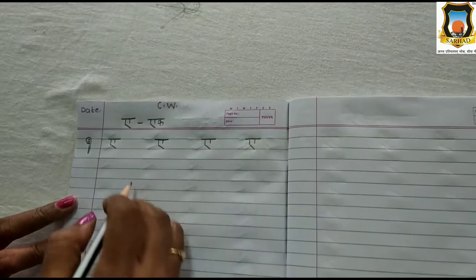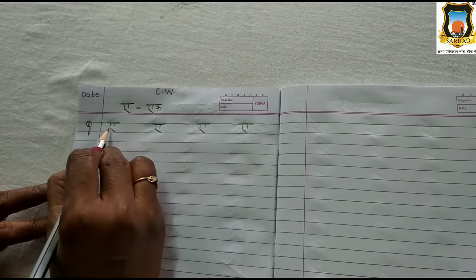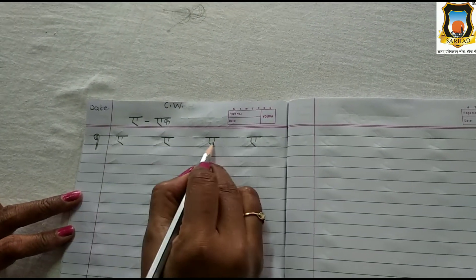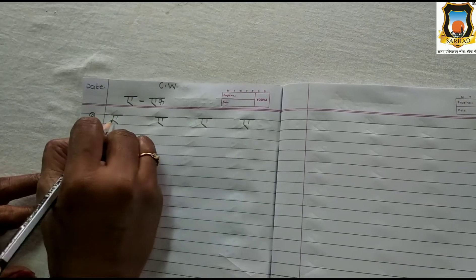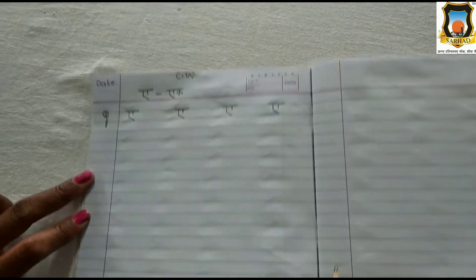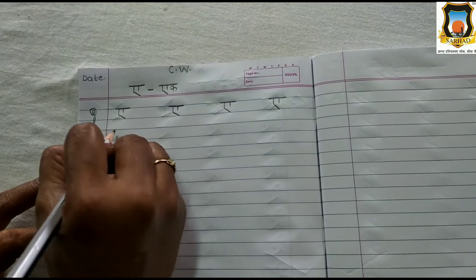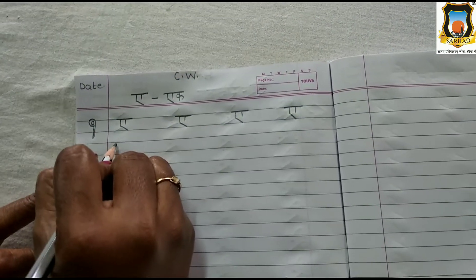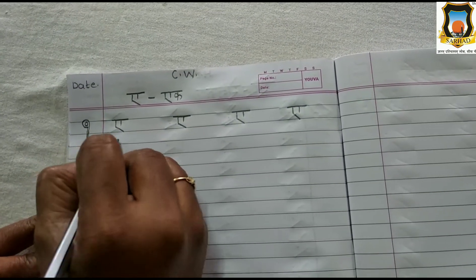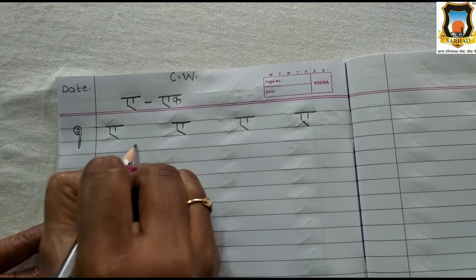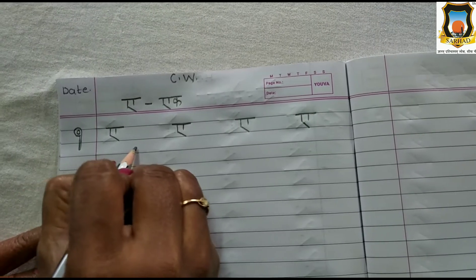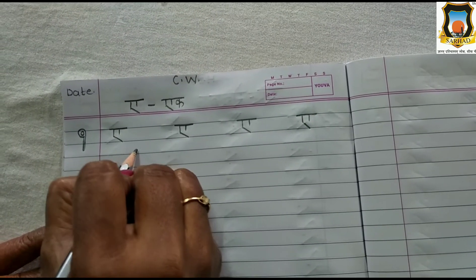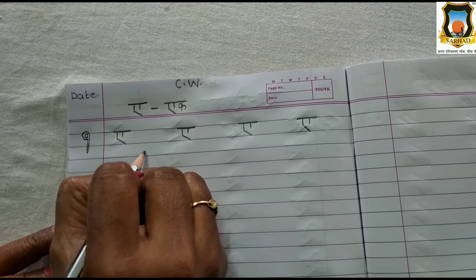How many times? Four times. One, two, three, four. So we will write here — skip one line here. Here we have one line, and here we have one line.